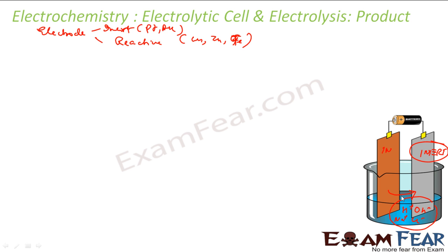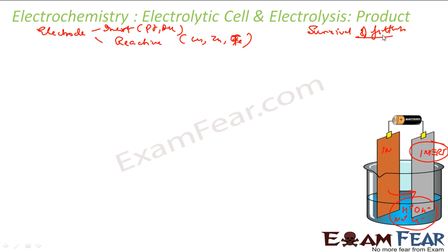The product of electrolysis will depend on the different oxidizing and reducing capacity of the species involved in the electrolytic cell — that is, their standard electrode potential. We have the concept of survival of the fittest. At the cathode, where reduction happens, we consider all standard potentials as standard reduction potentials. The species with higher reduction potential will be given priority.